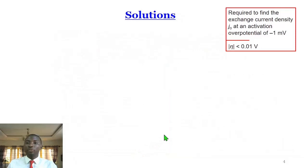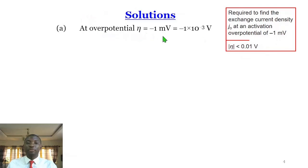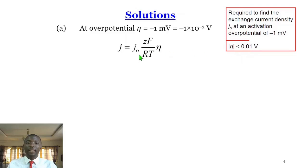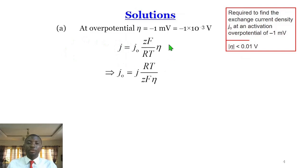For part A of question 1, we should find the exchange current density J0 at an activation overpotential of negative 1 millivolt. At this overpotential, negative 1 millivolt, which we can write in volts as negative 1 times 10 to the power of negative 3, the absolute value is less than 0.01. Therefore, the low overpotential limit of the Butler-Volmer equation applies.